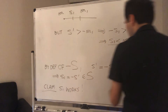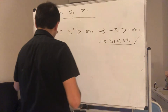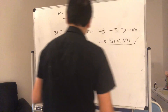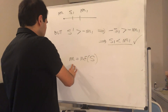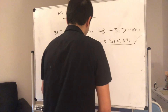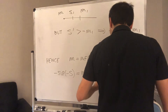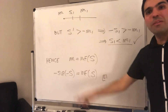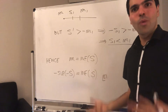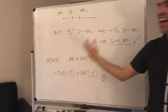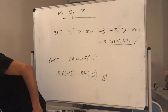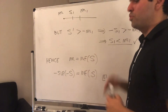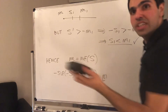Therefore, we have shown that M is the infimum of S, where M was just minus the supremum of minus S. This is the interesting interplay between infimum and supremum — we used the definition of infimum, and at some point used the fact that something is a supremum. This is useful because it says you never have to show statements about inf directly; you always just use this formula.